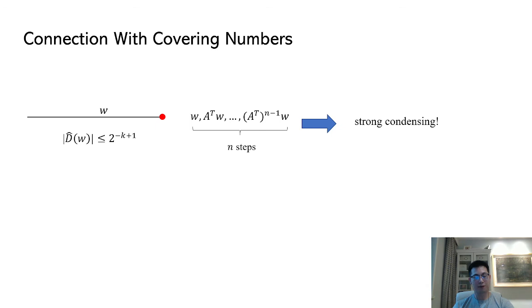As a summary of our proof technique, if the first bit of w or the red dot in the illustration is 1, then the absolute value of its Fourier coefficient is upper bounded by 2 to the minus k plus 1. Then repeatedly apply A transpose to w and check if the red dot is 1. After n steps, the register accumulates linear entropy. In this case, we use too many ones to upper bound the Fourier coefficients.